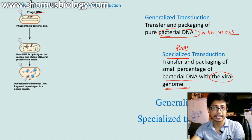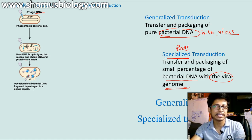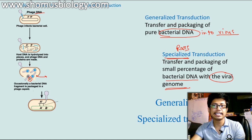Phage particles continuously package all those DNA fragments in the phage head. During this packaging, most of them receive the replicated phage DNA, but some phage heads receive a portion of bacterial DNA during packaging because the cell contains bacterial DNA fragments as well. Some of them can pick up this bacterial DNA. For example, here they pick up the A plus gene from the bacterial DNA, and once all these phages are released by killing the bacterial cell, one of those phages which carries the A plus gene may infect some other bacteria.